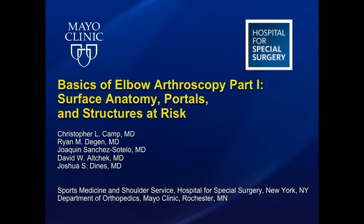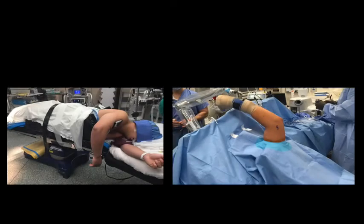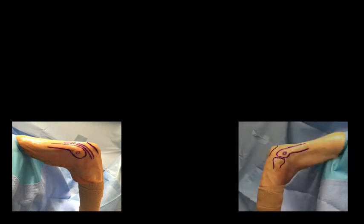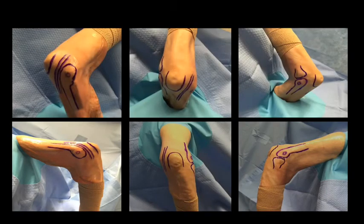The following video is part one in a three-part series on the basics of elbow arthroscopy. In this video, we'll discuss pertinent surface anatomy, portals, and key structures at risk. Because most arthroscopic procedures are performed with a patient in either the lateral decubitus or supine position, we will discuss both in this video. We'll begin with the lateral decubitus position and discuss the medial, lateral, and posterior anatomy, then discuss the same for supine positioning.